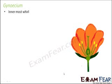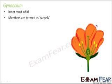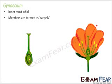Finally, the fourth whorl is the gynoecium, which is the innermost whorl and it represents the female reproductive organ. The members are called carpels. The gynoecium is located at the center and contains the carpels. We will also study the structure of the carpel in detail later, as it is the female reproductive organ.